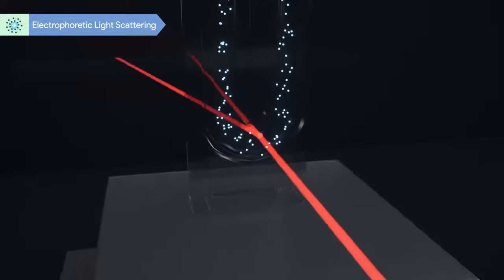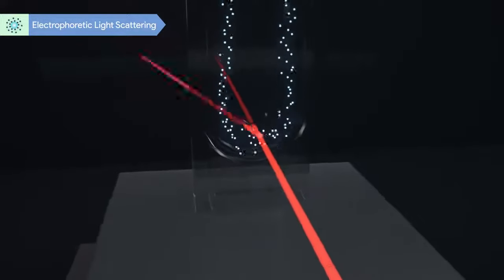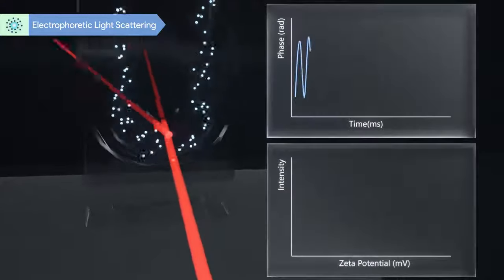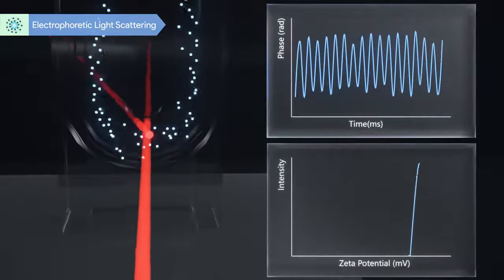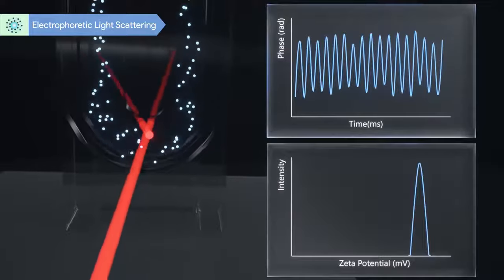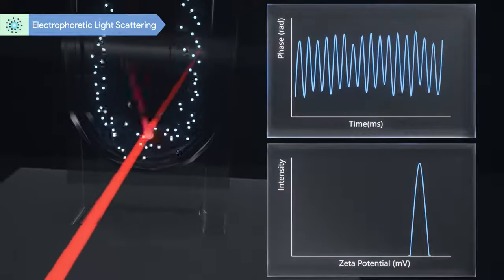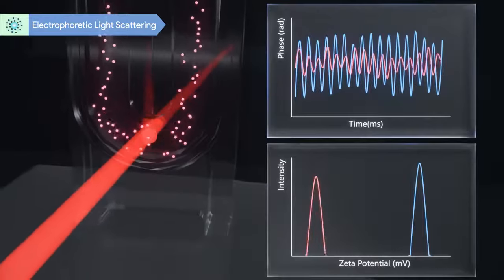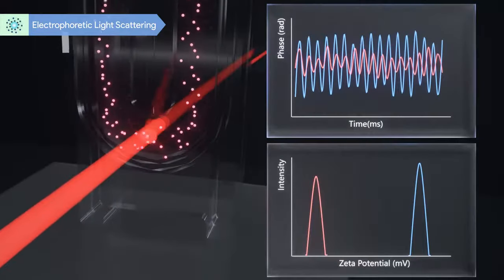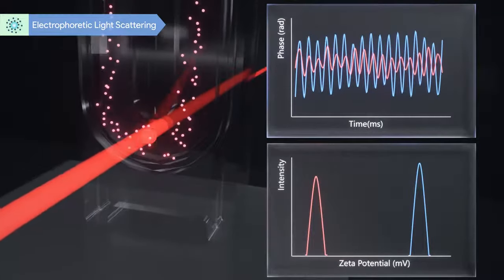B-Nano adopts the most accurate ELS signal analytical algorithm, phase analysis light scattering known as PALS technology. It can effectively extract useful signals even for samples with weak electrophoretic mobilities, either with a high salinity environment or close to the isoelectric point.